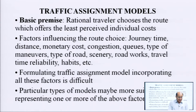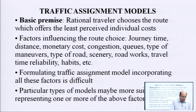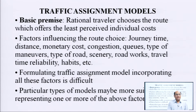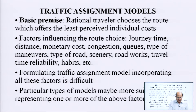Traffic assignment models: the basic premise is that a rational traveler chooses the route which offers the least perceived individual cost. Factors influencing route choice include journey time, distance, monetary cost, congestion, queue, type of maneuver, type of road, scenery, road works, travel time, system reliability, habit, etc. Formulating a traffic assignment model incorporating all these factors is difficult; particular types of models may be more suited to representing one or more of the above factors.